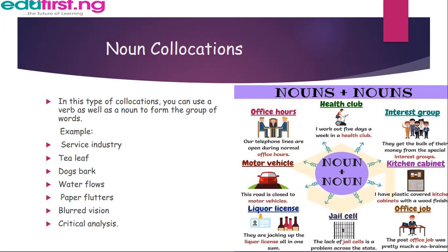Number three: noun collocation. In this type of collocation, you can use a verb as well as a noun to form the group of words. For example: service industry, sea leaf, dog's bark, water flows, blood vision, critical analysis, and many others.